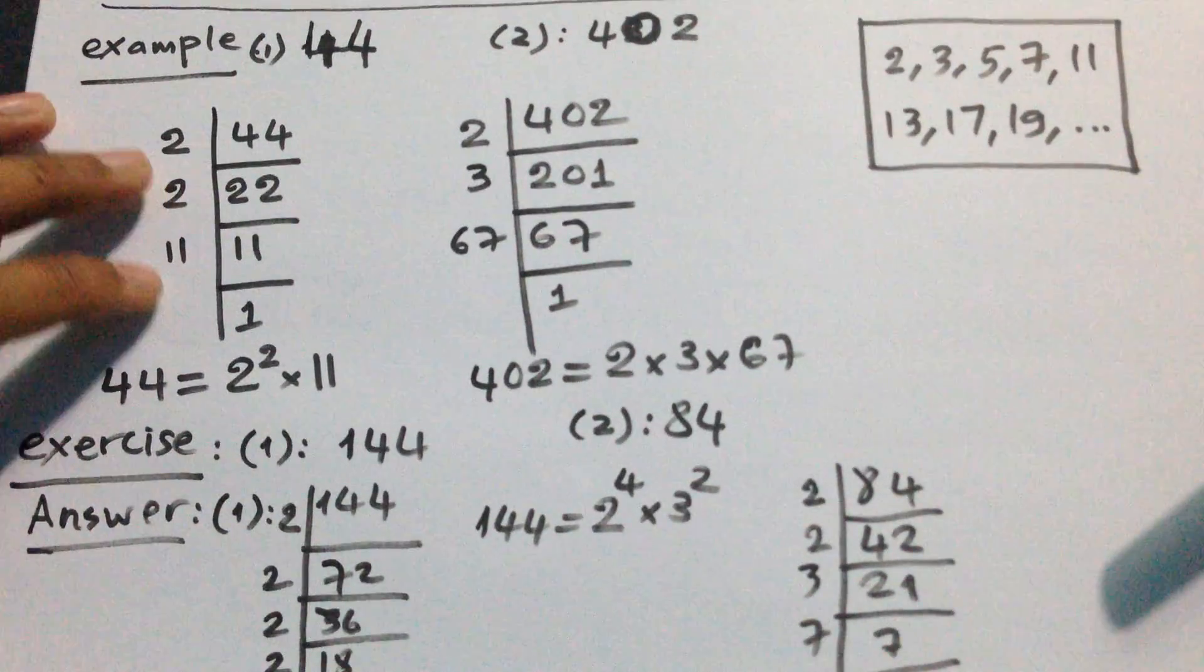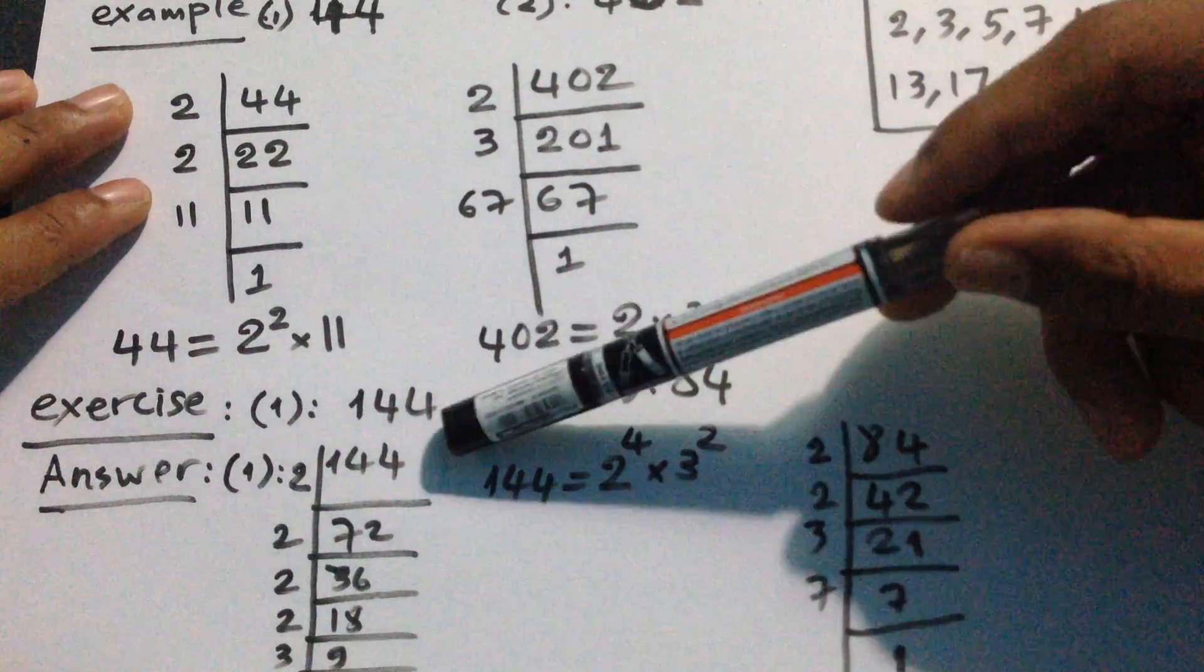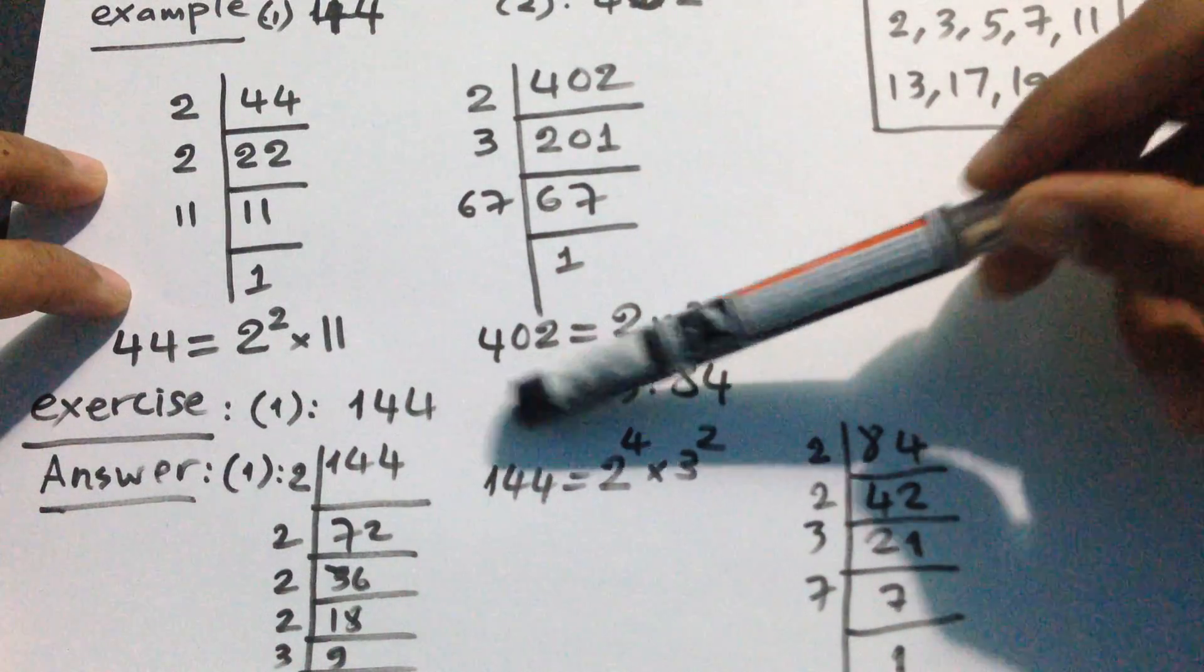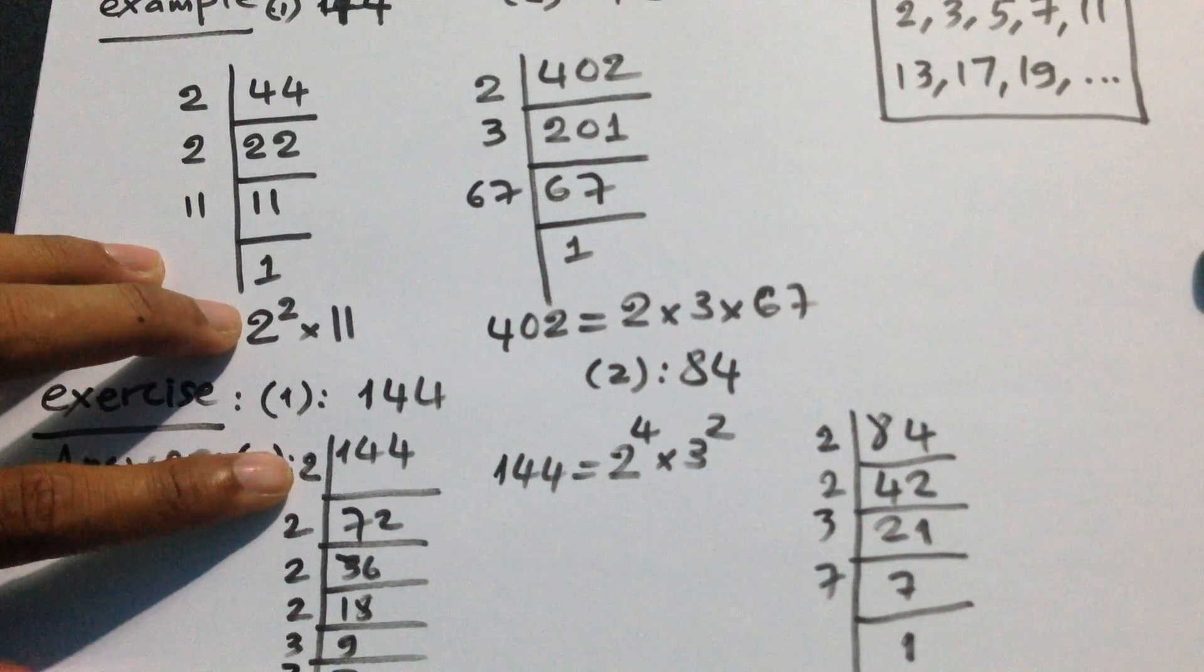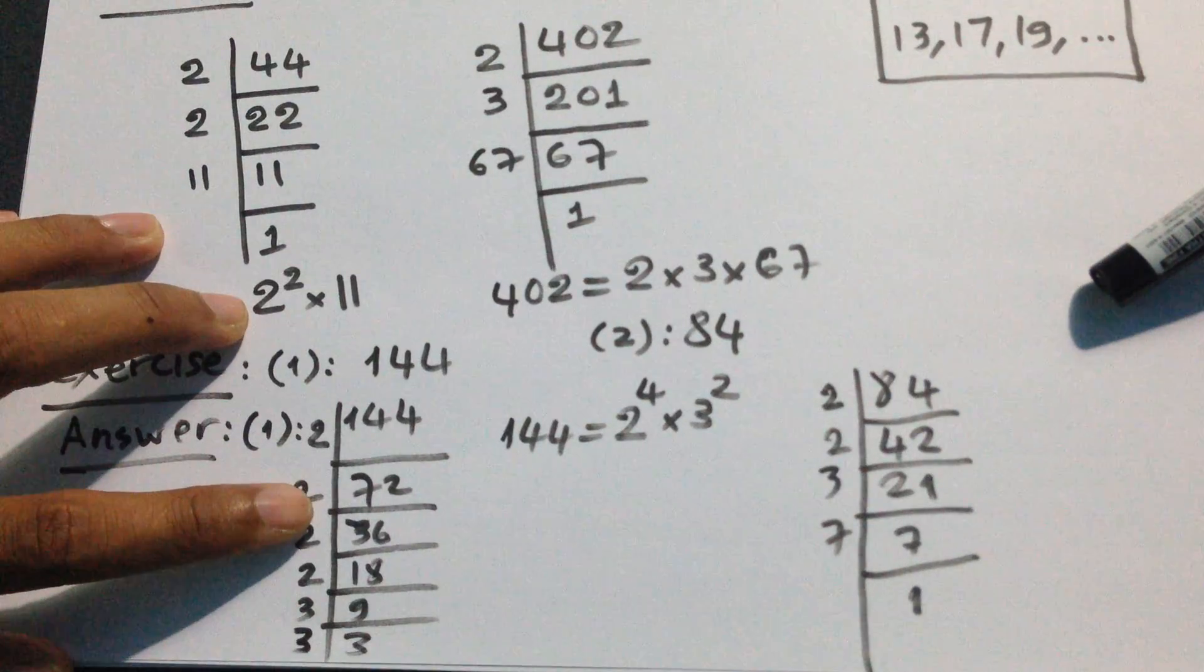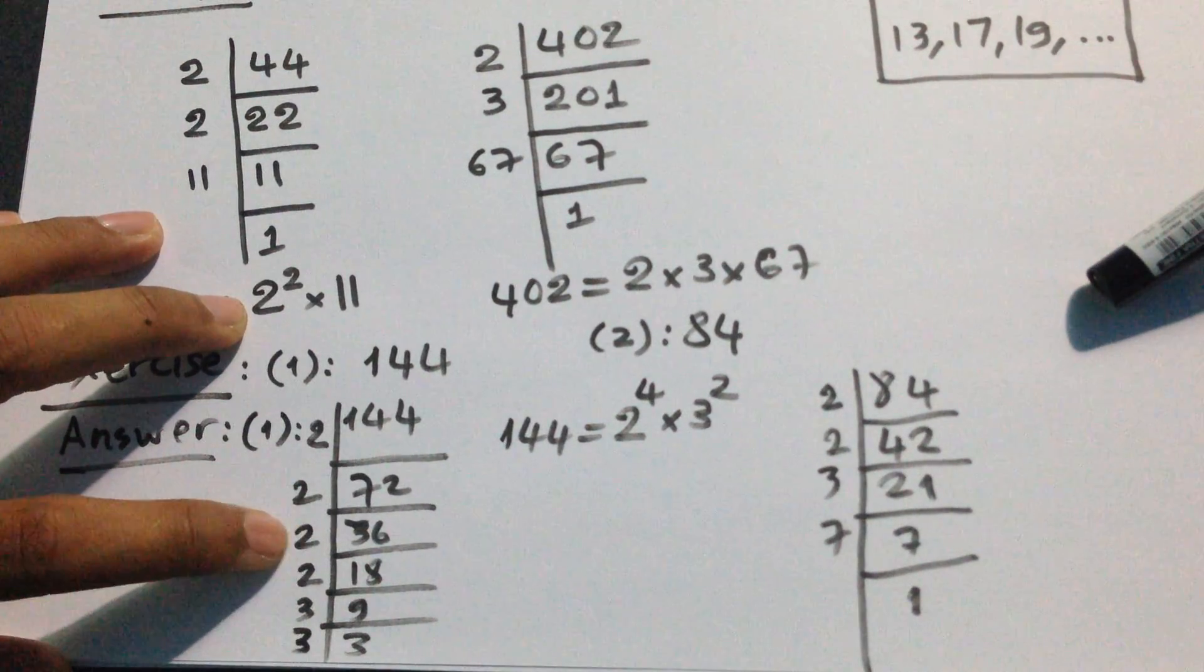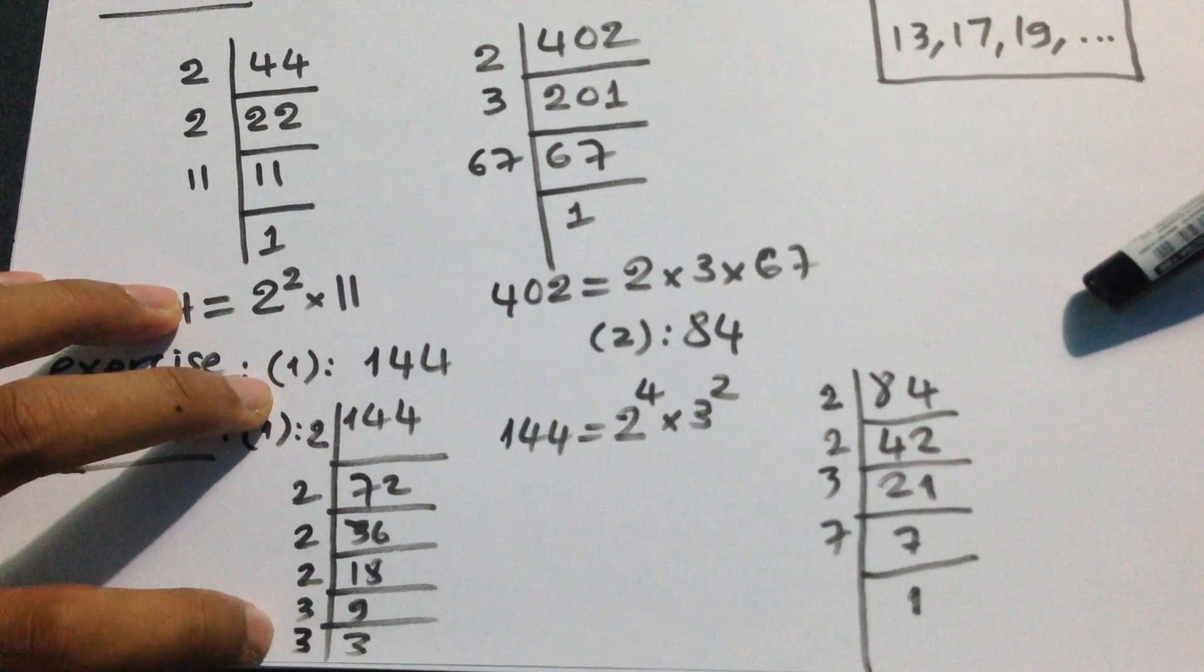How about exercise? Exercise I left like this: 144 and 84. So the answer, 144, we can divide by 2. We can divide by 2, 72. Divide by 2, 36. Divide by 2, 18. Divide by 2, 9. Divide by 3, 3. Divide by 3.